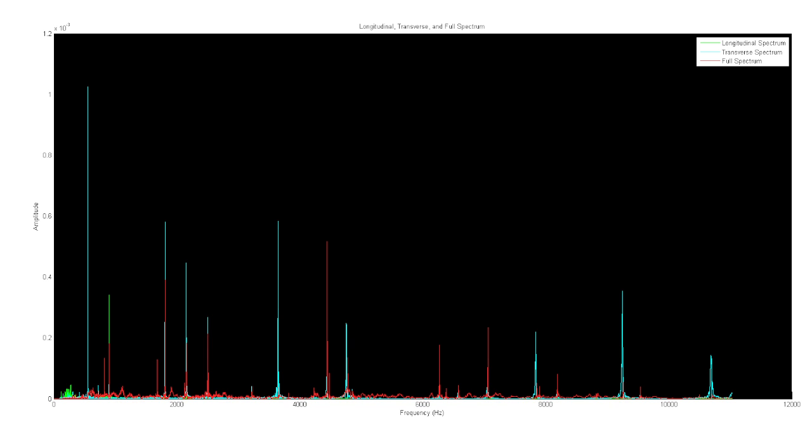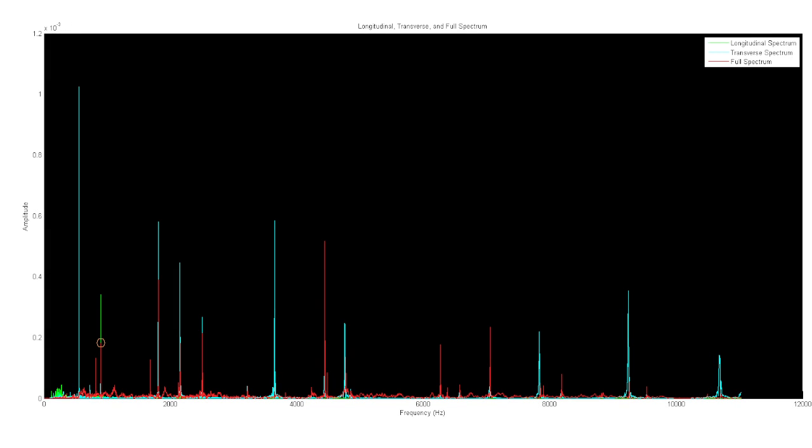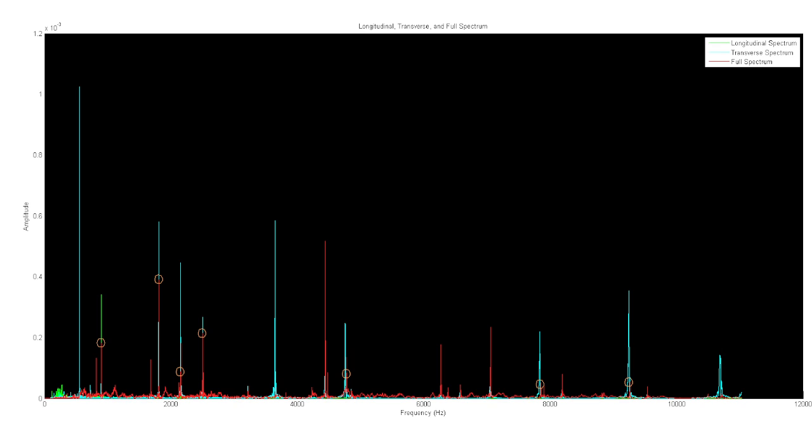By overlaying the three good power spectrums, we can summarize the contributions of these two types of oscillation. Longitudinal oscillations seem to contribute largely in only one frequency, while transverse oscillations contribute to a number of peaks. But what about the full-spectrum peaks that do not correspond to either of these vibrations? Can we assume that they come from the torsional oscillations? Not quite.